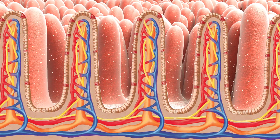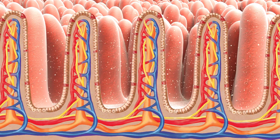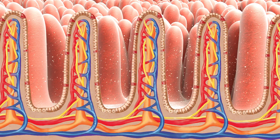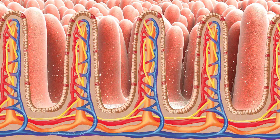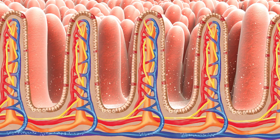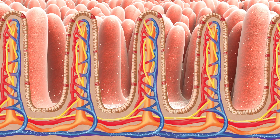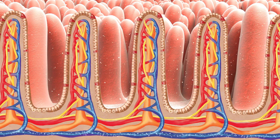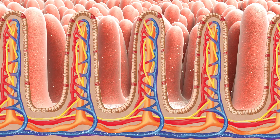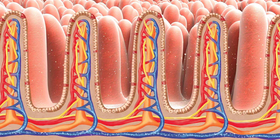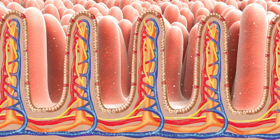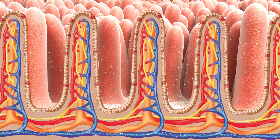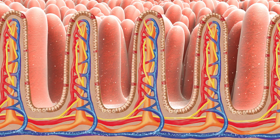Looking closer at these villi, you can see they have a rich blood supply and they are covered in a thin layer of epithelial cells. The aspirin molecules will work their way through the epithelial cells and into the bloodstream, where they are carried around the body.